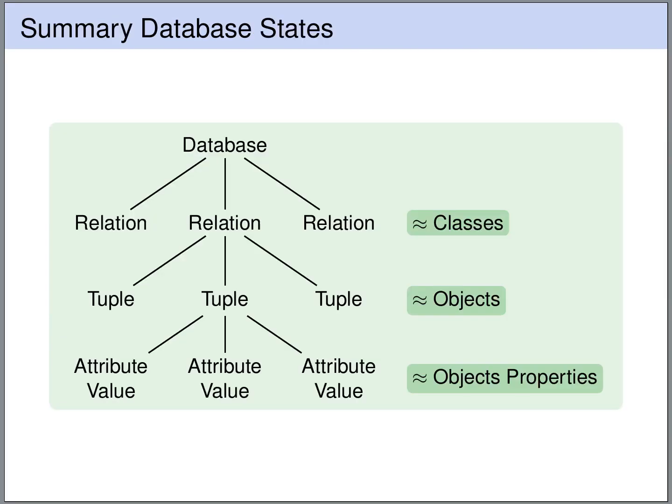To summarize the structure of databases: every database consists of a number of relations, every relation consists of a set of tuples, and every tuple holds a number of attribute values.